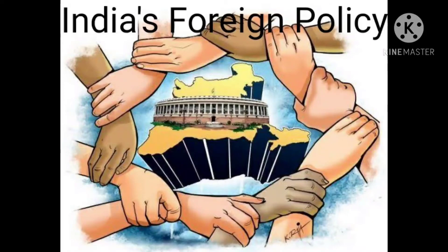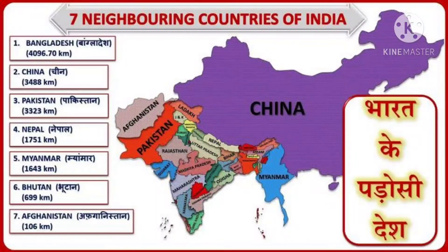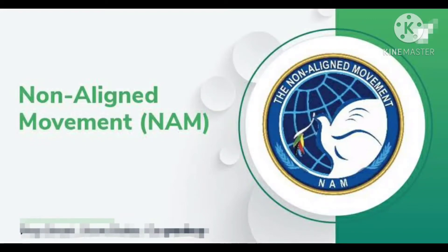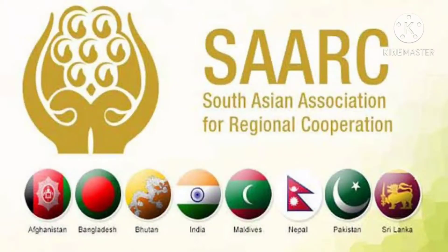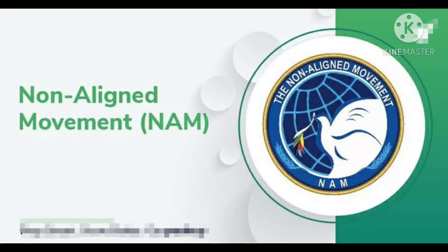India's Foreign Policy: Pakistan, Afghanistan, China, Nepal, Bhutan, Bangladesh, Myanmar and Sri Lanka are the neighboring countries of India. Since independence, India has tried to maintain cordial relationships with her neighbors. The main features of Indian foreign policy have been the Non-Alignment Movement and SAARC, that is the South Asian Association for Regional Cooperation. Now let's talk about the Non-Alignment Movement, that is NAM.